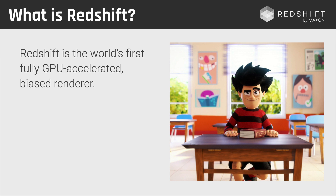On the Redshift website, it says that Redshift is the world's first fully GPU-accelerated biased renderer. Fully GPU-accelerated means that Redshift is a GPU renderer — it's running on the GPU only. And biased means that Redshift does not necessarily do things as they would happen in nature, but it fakes some things in order to optimize them for rendering.